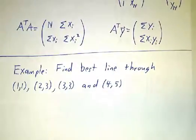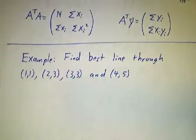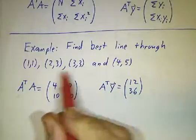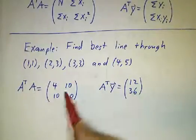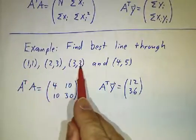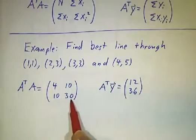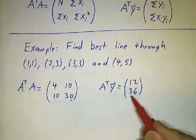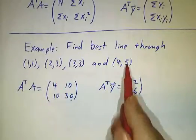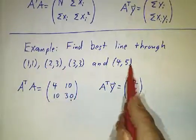Let's do an example: find the best line through the points (1,1), (2,3), (3,3), and (4,5). We have four data points, so the (1,1) entry is 4. The (1,2) entry is 1+2+3+4 = 10. The (2,2) entry is 1²+2²+3²+4² = 30. For A^T y, the first entry is 1+3+3+5 = 12, and the second entry is 1·1 + 2·3 + 3·3 + 4·5 = 36.